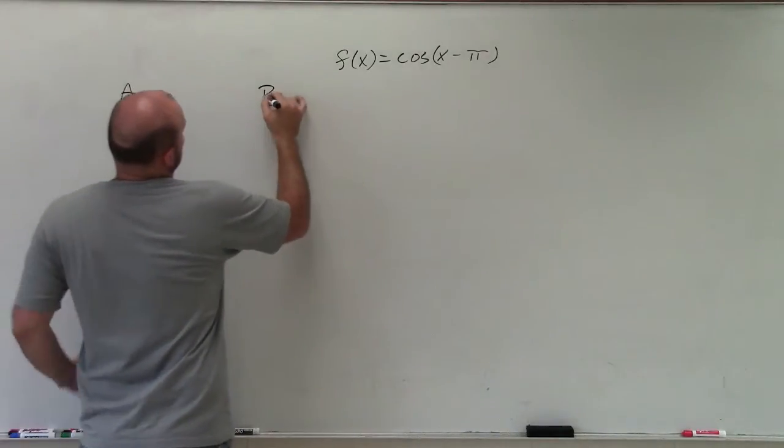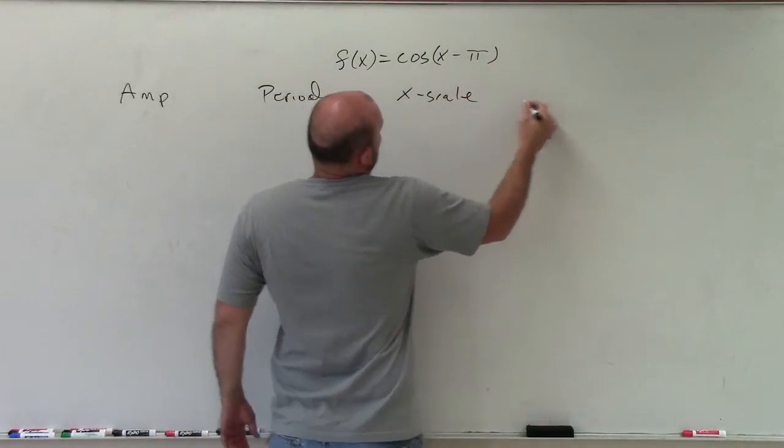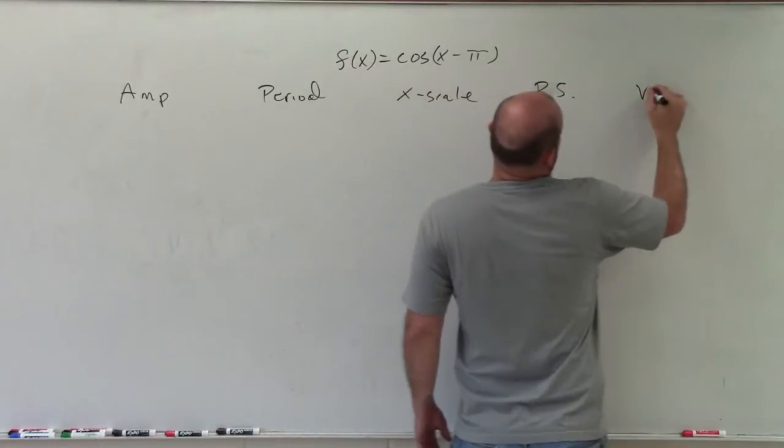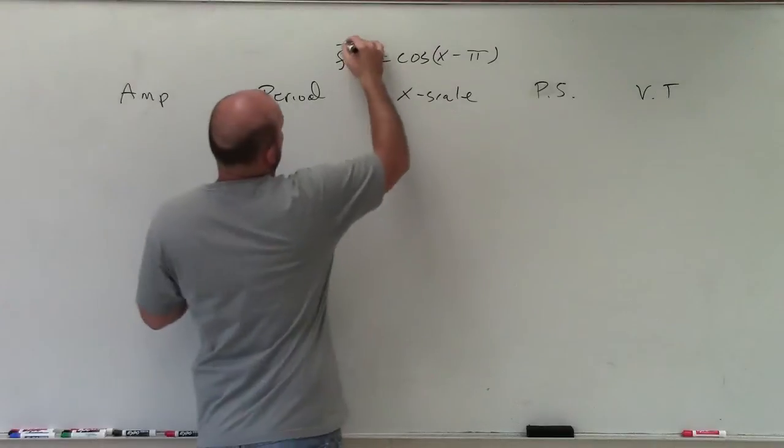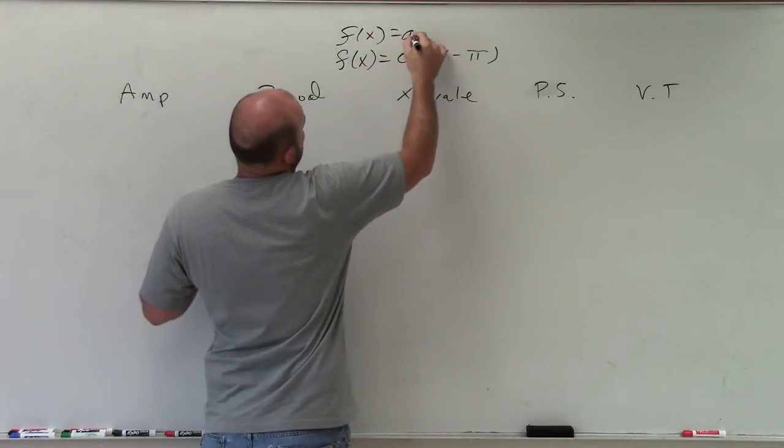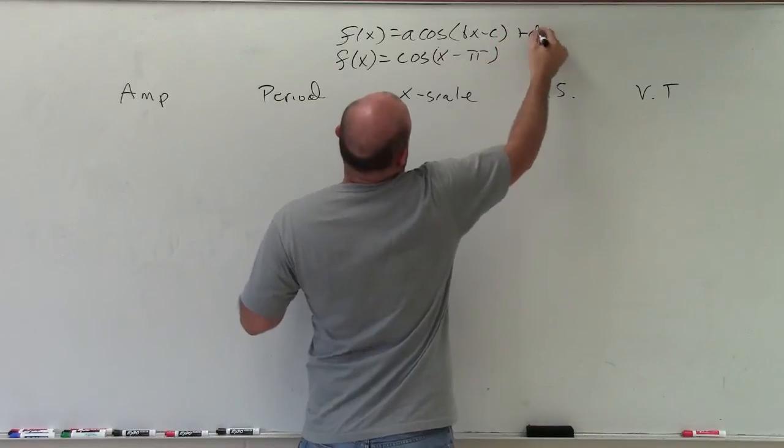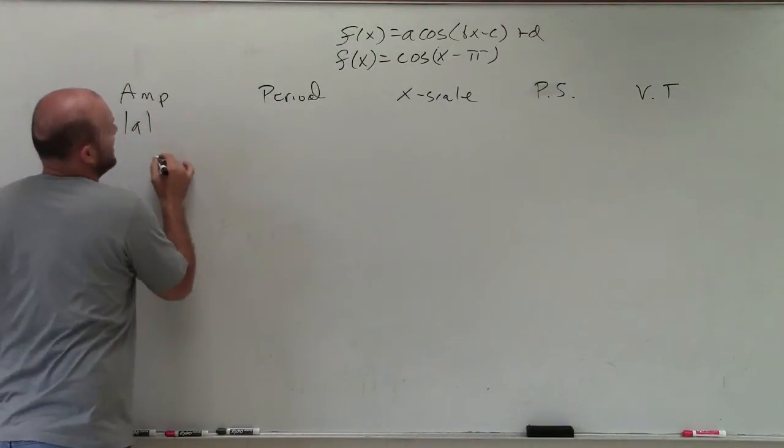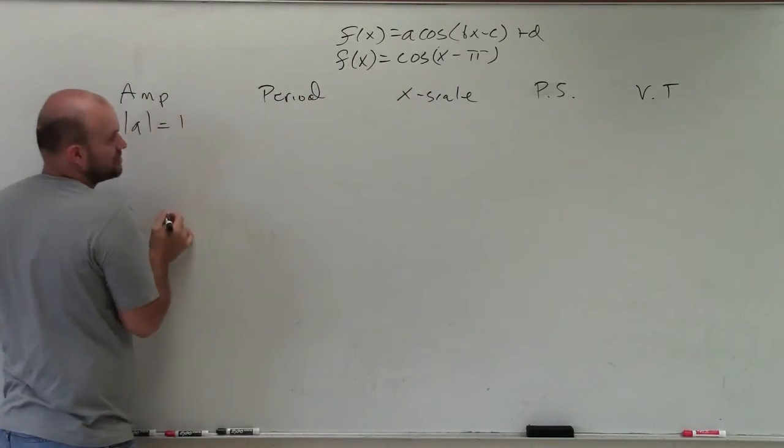Real quick, let's find out everything we need to graph cosine. We need to know the amplitude, the period, the x-scale, the phase shift, and the vertical transformation. Before I do that, where am I going to determine all these? Well, we need to know the transformation formula for cosine. So amplitude is the absolute value of a, which in this case we have 1, so absolute value of 1, which is just 1.